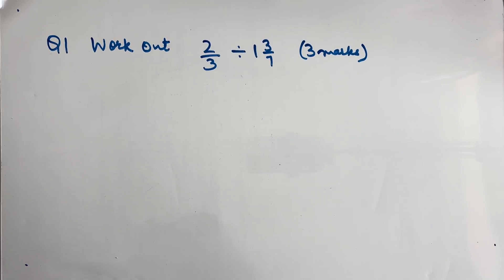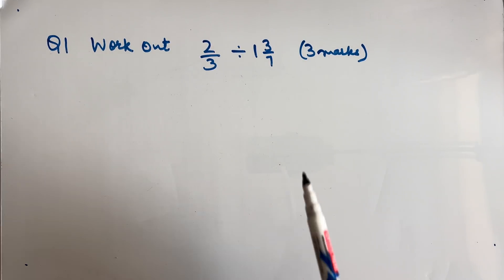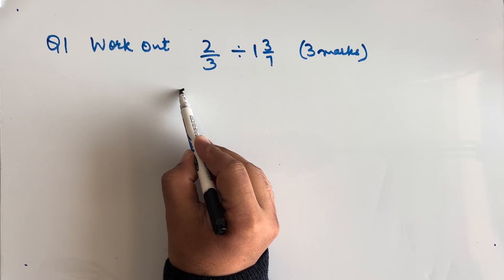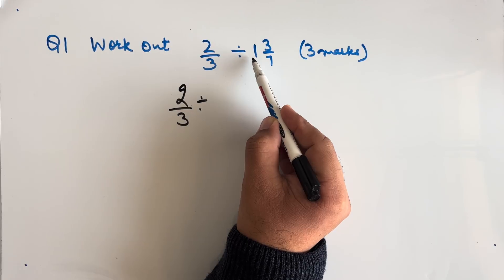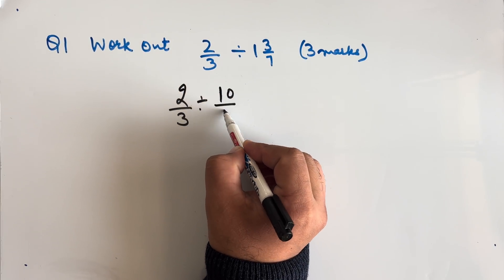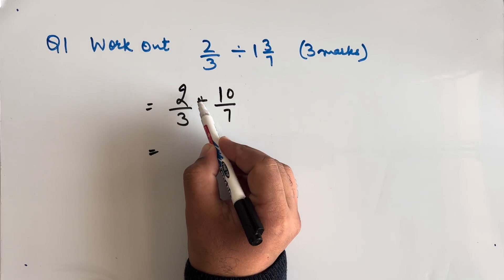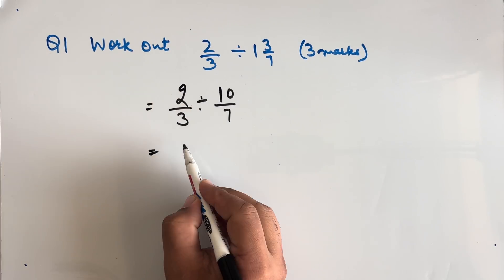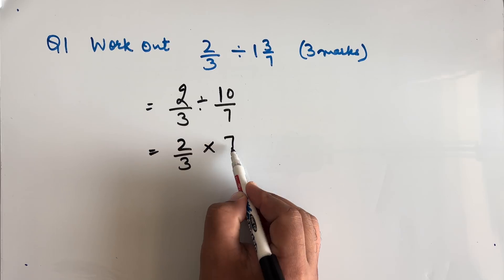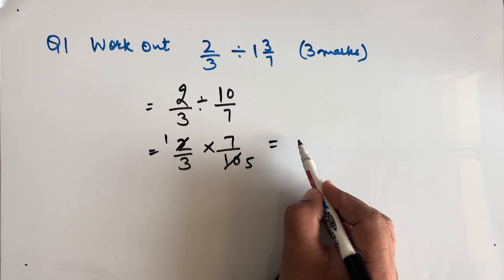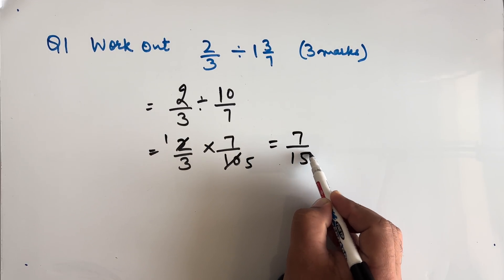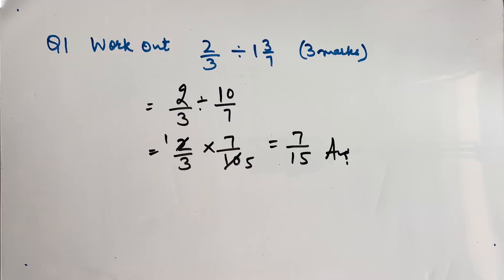Question 1: Work out 2/3 divided by 1 and 3/7. This is worth 3 marks. This can be written as 2/3 divided by 10/7. Converting the division to multiplication by flipping: 2/3 × 7/10. This cancels to give 7/15 as our answer.